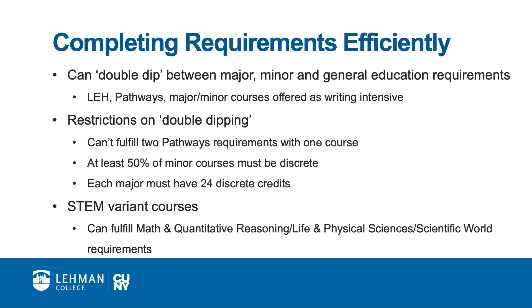Some courses in the Pathways curriculum are designated as STEM-variant courses. Often, these courses will have additional prerequisites and or be worth more than three credits. In order to make efficient progress toward graduation, students pursuing STEM majors or professions should use STEM-variant courses to fulfill the mathematical and quantitative reasoning, life and physical sciences, and scientific world requirements, since these courses may also satisfy major or professional licensing requirements.